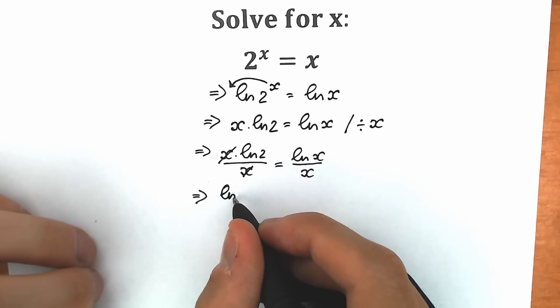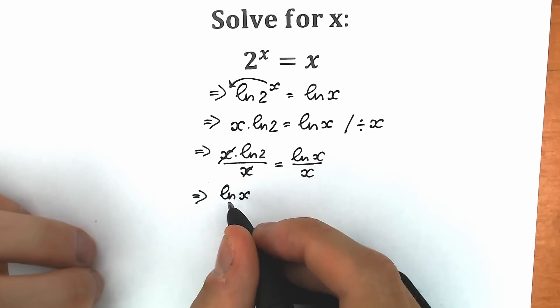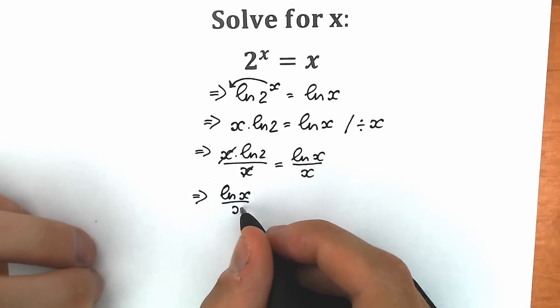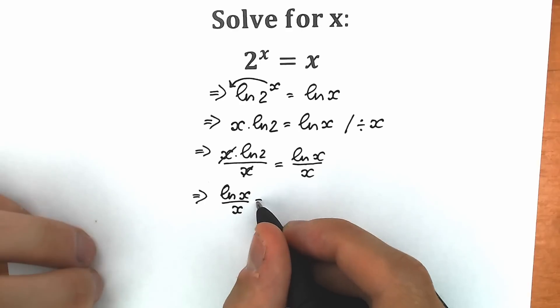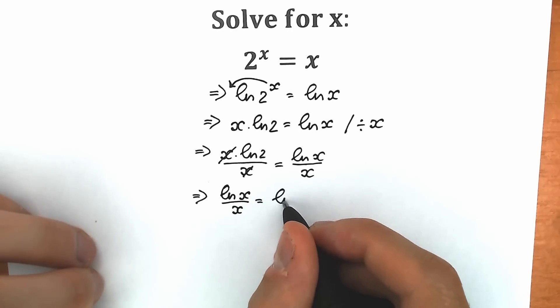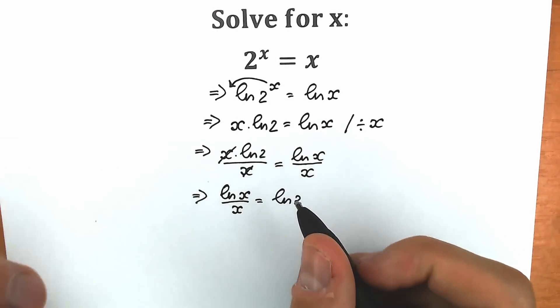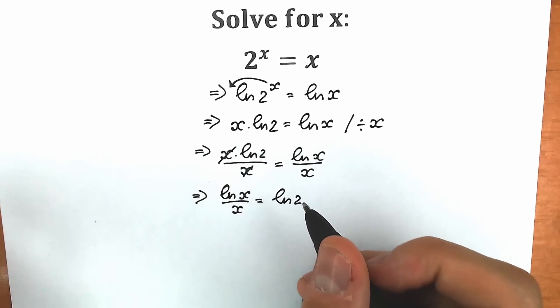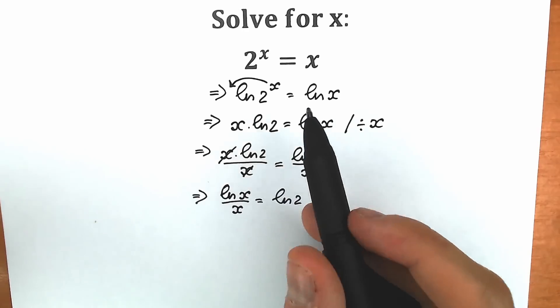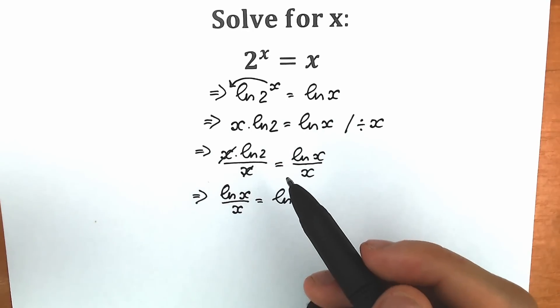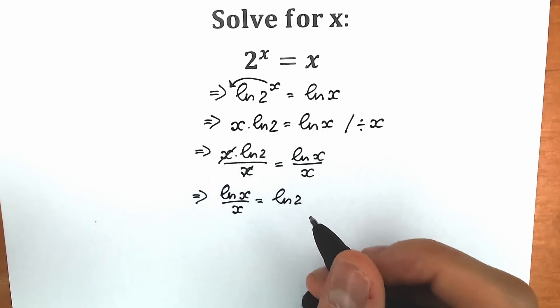So we have natural log x divided by x equal to natural log 2. This is our first key step — I hope you understand this step using natural log.